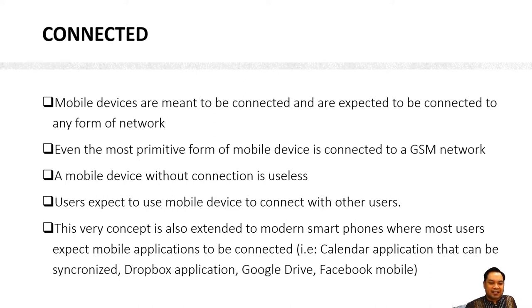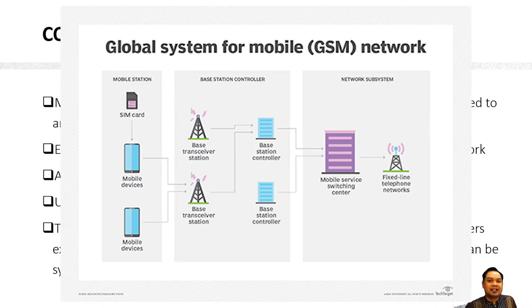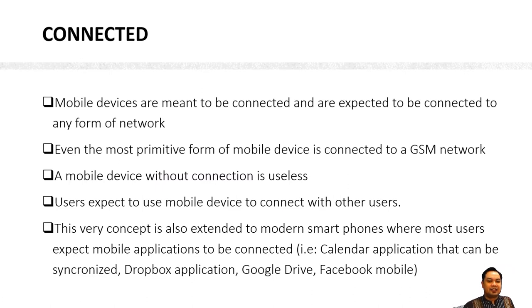The next characteristic is connected. All mobile devices are connected to some sort of communication network. At the very minimum, the mobile device is connected to a GSM network or a data network. Any mobile device that is not connected would be useless — users buy a mobile device precisely because it is a connected device.